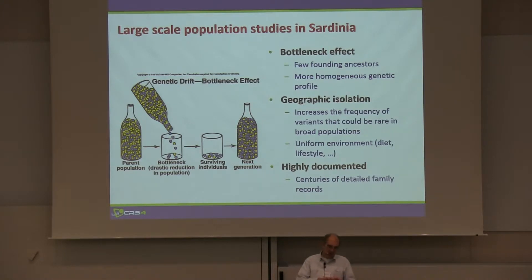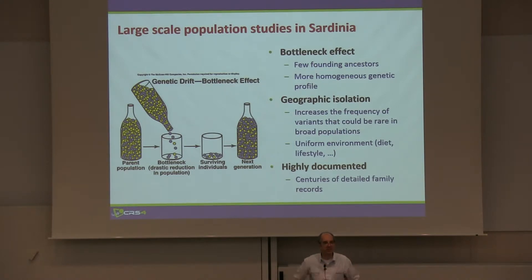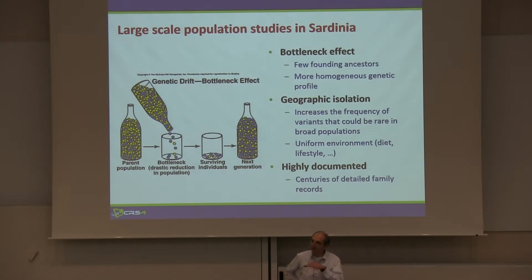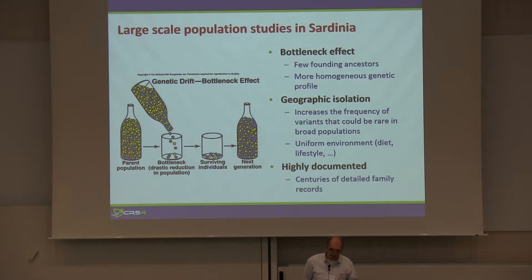Also, due to the way the land is made — lots of hills and mountains, secluded valleys — there has been geographic isolation of small groups of people. This increases the frequency of variants that could be rare in a broader population. It also provides a uniform environment from the point of view of diet, lifestyle, and everything else within these groups. On top of that, it's a highly documented population system.